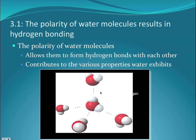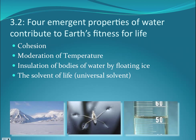The first section in chapter 3 looks at the polarity of water molecules, which results in hydrogen bonding. It's this polarity that allows water molecules to form hydrogen bonds with one another, and these hydrogen bonds contribute to the various properties that water is capable of exhibiting.